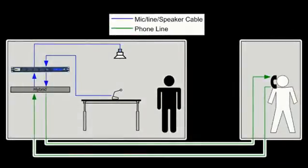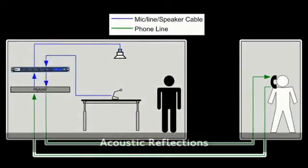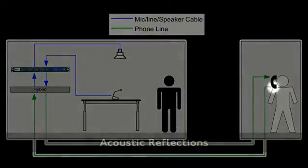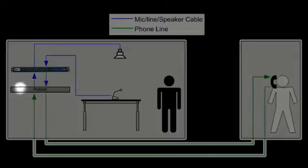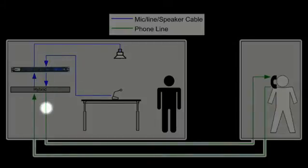The second cause for echo is acoustic reflections in the near-side. The far-side talker's speech travels through the phone line, exits the loudspeaker, and in addition to directly entering the microphone, also reflects off the various surfaces in the room before entering the microphone. As a result, the far-side talker hears an indirect, room-colored echo.